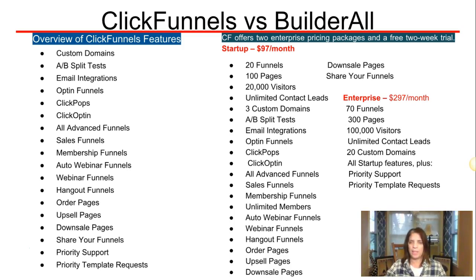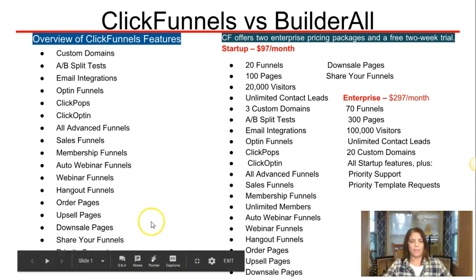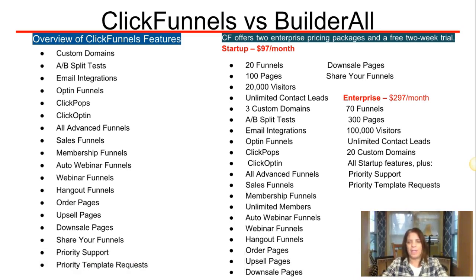ClickFunnels has two pricing tiers. The Startup plan is $97 a month — it lets you build 20 funnels, gives you 100 pages, 20,000 visitors, unlimited contact leads (since you use your own autoresponder), 3 custom domains, A/B split testing, all the email integrations, opt-in funnels, click pops, unlimited members, auto webinar funnels, webinar funnels, hangout funnels, upsell and downsell pages, and the ability to share your funnels.